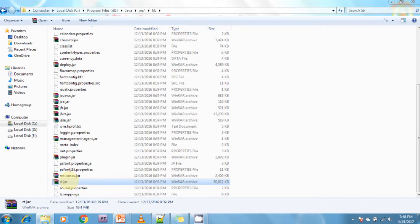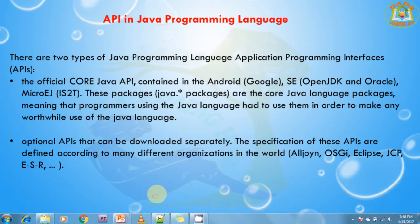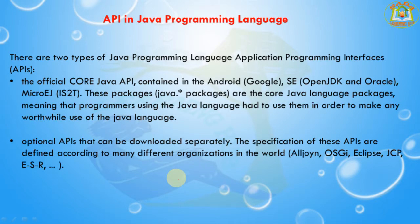The company that creates software is called a software vendor company — for example, IBM, Sun Microsystem, Oracle Corporation, etc. The organization that gives requirements to a software development company is called a client organization — for example, Citibank, SBI Bank, APSRTC, etc. These are all client organizations because they provide requirements to develop software.